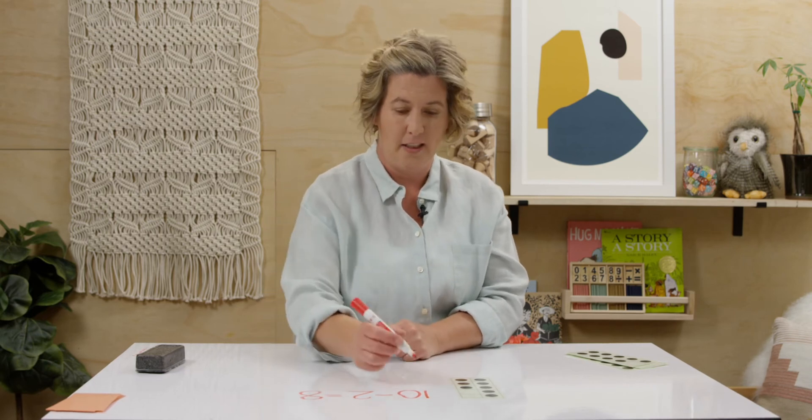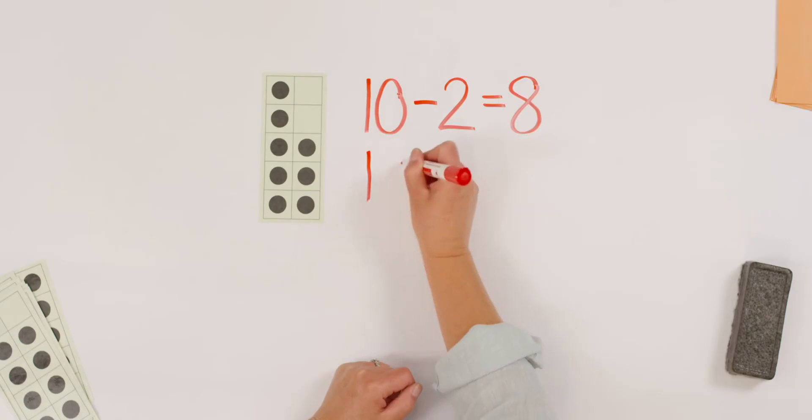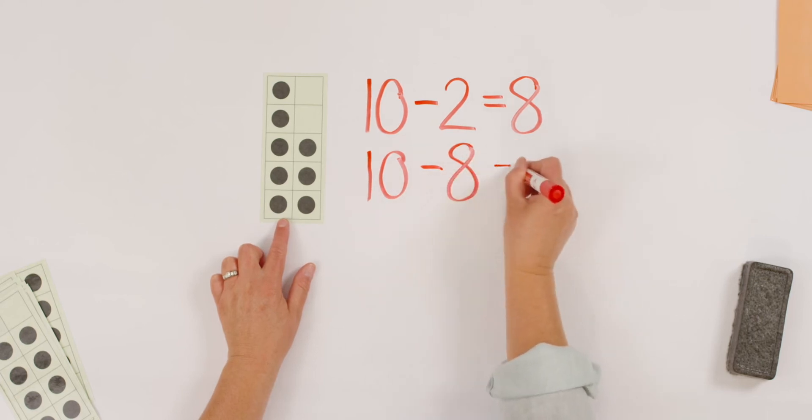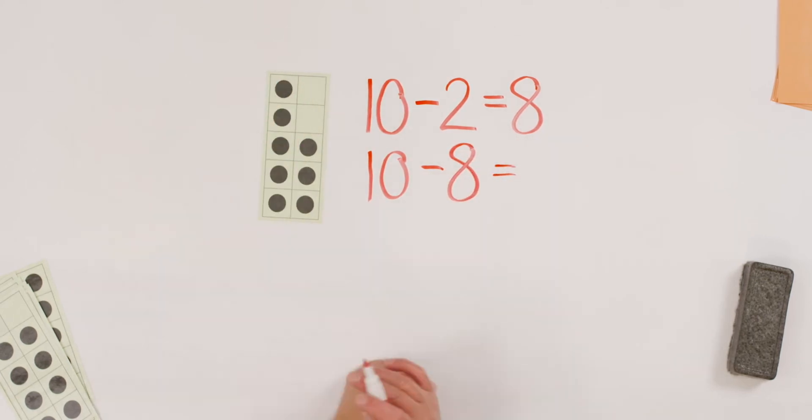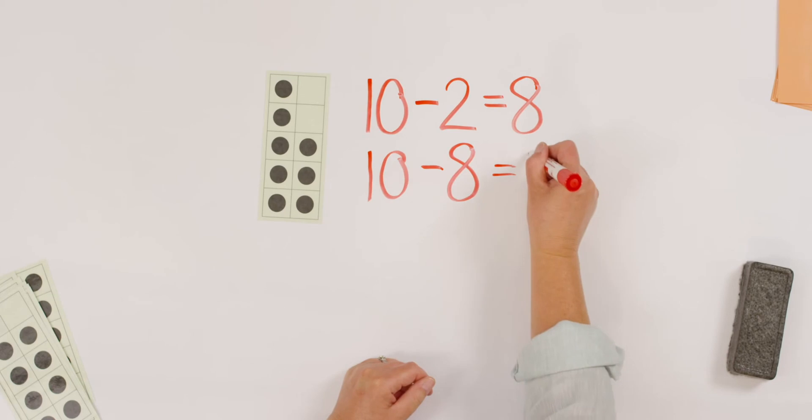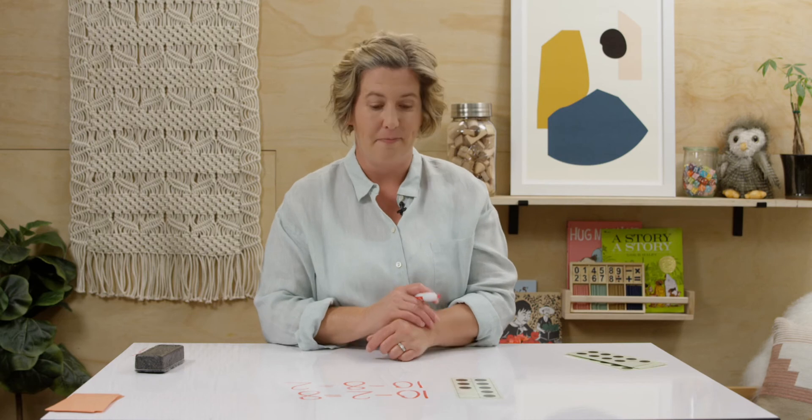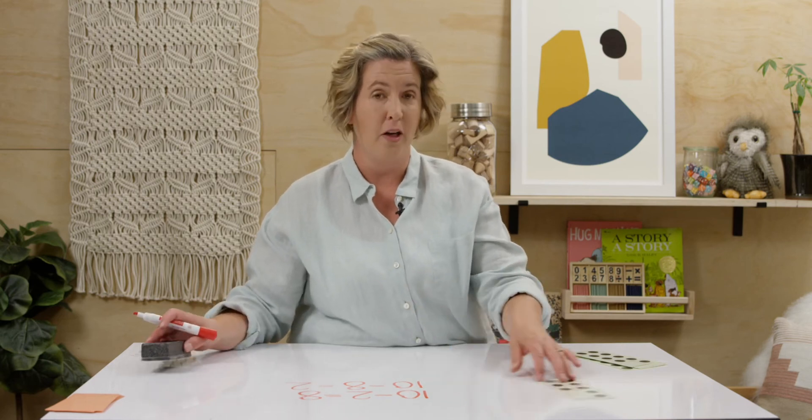So what's the other subtraction problem we can write with the same numbers? You got it. Start with our whole is 10. 10 minus 8 dots leaves me 2 extra, right? 10 minus 8 equals 2. How'd you do? Let's do it again. This time you can write them with me.